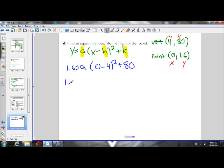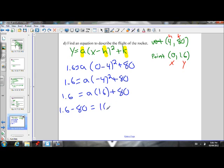Go ahead and solve this. Brackets first. Then exponents. Negative 4 squared is 16. Now I want to get A by itself, so I'm going to move the 80 over.